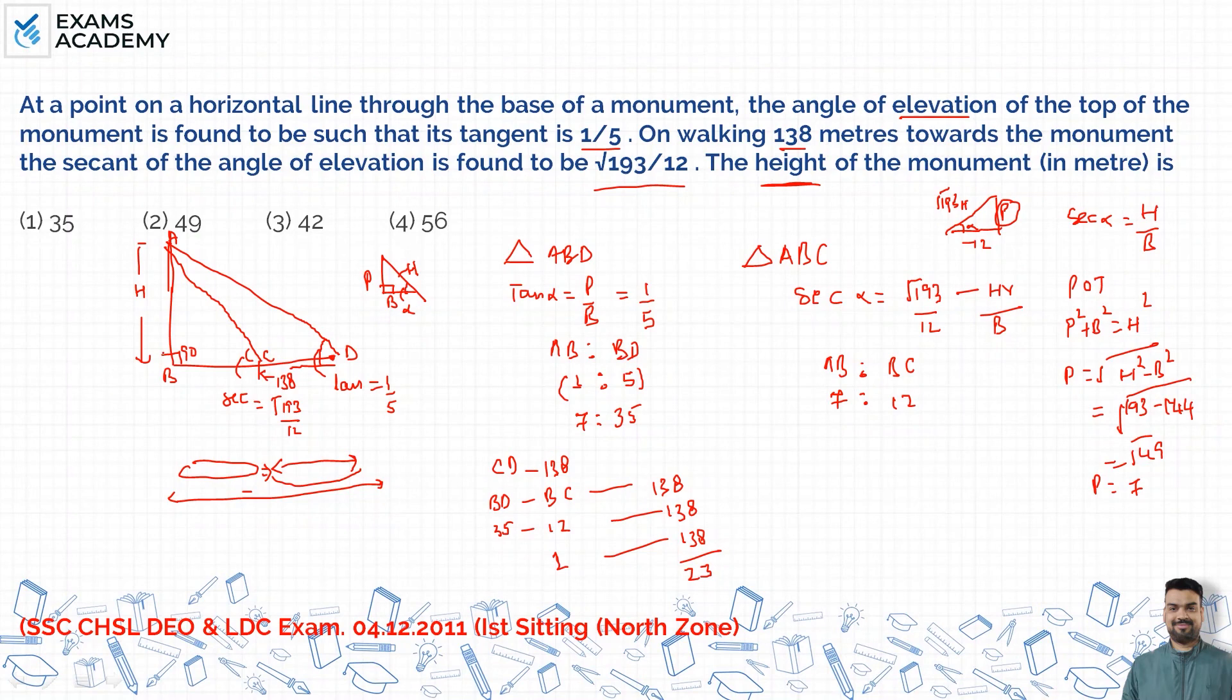We need to find monument AB. Here also it's 7, same ratio. So we need to find 7's value. Multiply this by 7, so 23, how many times? 6 times. So 6 times 7 is 42. So 42 meters is my correct answer, option number 3.